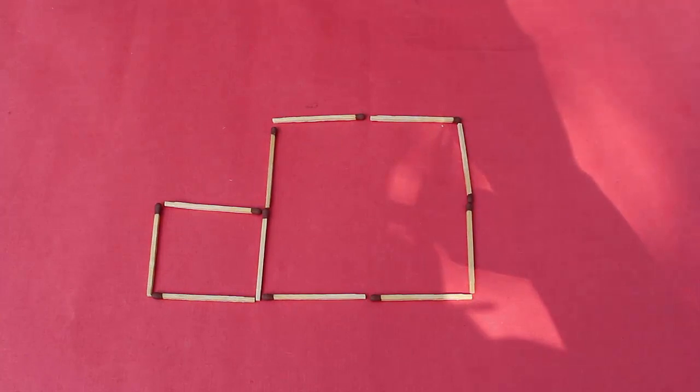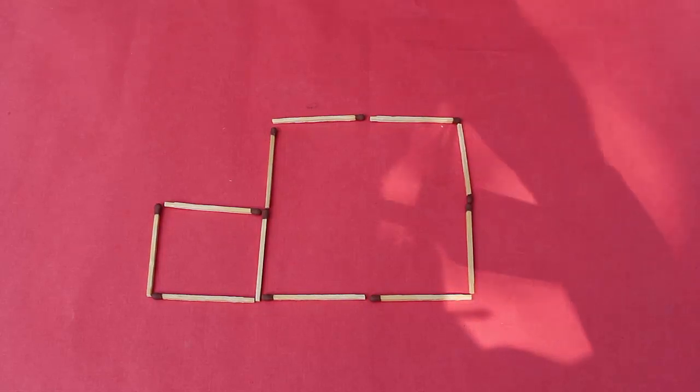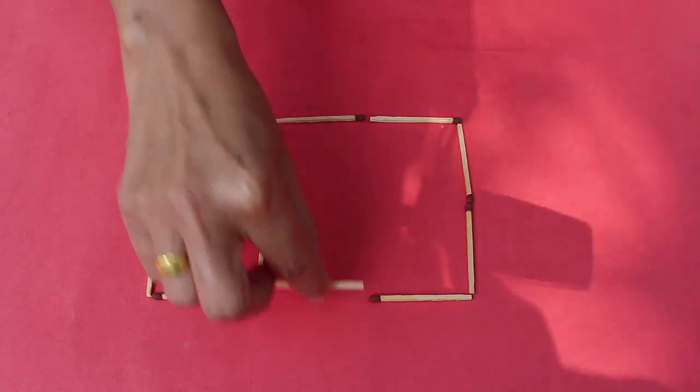Now in this puzzle you have a large square and a small square. By shifting just three sticks can you make three squares of exactly the same size.